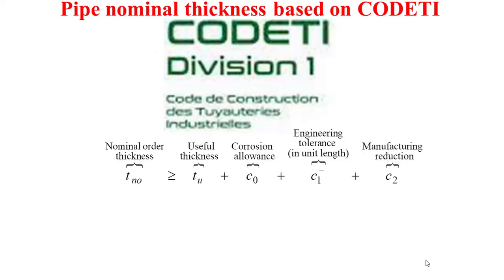CODETI states that the nominal order thickness of the pipe should be no less than a certain useful thickness plus a corrosion allowance, plus an engineering tolerance in unit length, plus a manufacturing reduction.